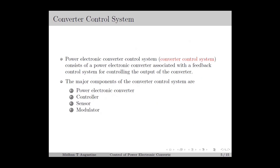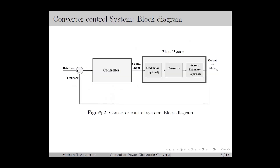In general, a power electronic converter control system — which we call the converter control system — consists of a power electronic converter associated with a feedback control system for controlling the output of the converter. The major components are the power electronic converter, controller, sensor, and modulator. Figure 2 shows the block diagram of the converter control system. The converter, sensor, and modulator are grouped together as the system. The modulator and estimator are optional and depend on the control scheme used. Modulators are usually required with classical control approaches, whereas estimators are required for modern control schemes.